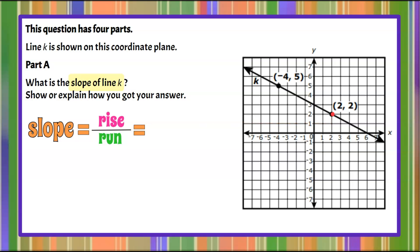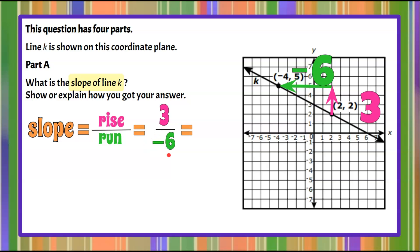So here we go — rise over run. We're going to start at any point on the line. I'm going to rise and run to get to the next point. Our rise is 3. Our run is going to be negative because I'm going left on our coordinate plane — 1, 2, 3, 4, 5, 6. Our rise was positive 3, and our left direction went negative 6. We're going to simplify this: 3 over negative 6 simplifies to negative 1/2. So the slope of line k is negative 1/2. Using this as our ratio, we can rise 1 and run negative 2 — we're on the line.